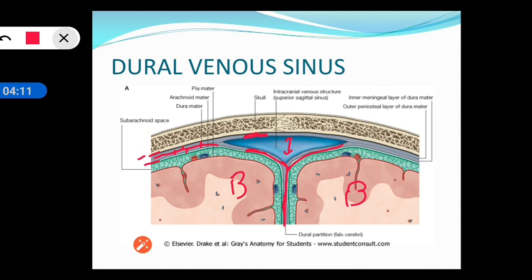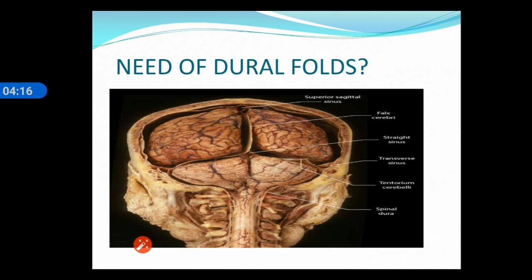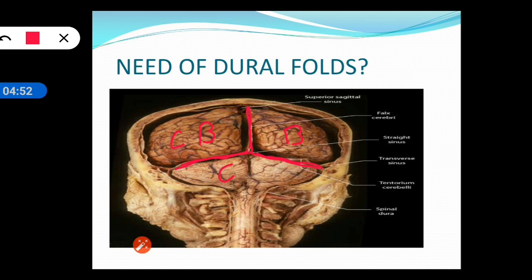These dural folds divide the inner aspect of the cranial cavity into compartments inside which the brain is placed very safe and secure. You can see the cerebrum and the cerebellum each in their compartment. If the folds were not there, during any rotation of the skull the brain tissue would have been damaged. So the dural folds safely secure and protect the brain.